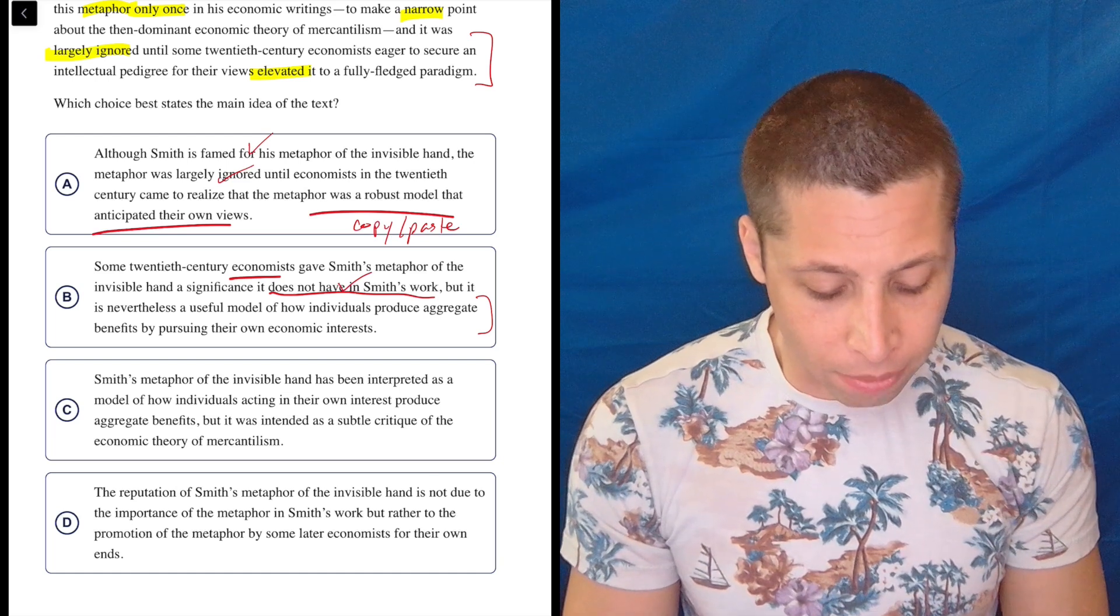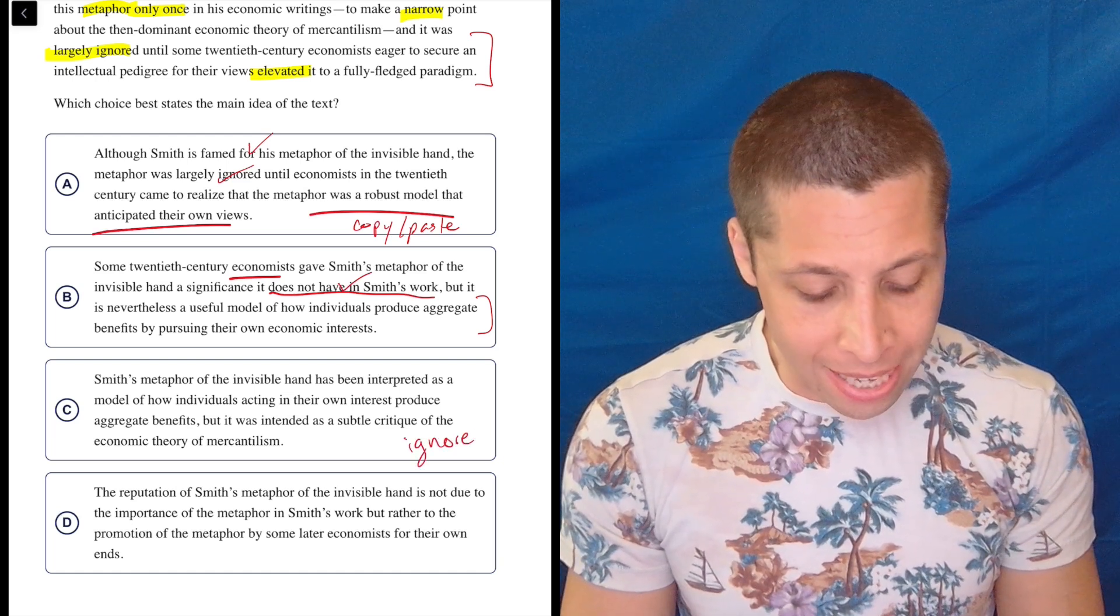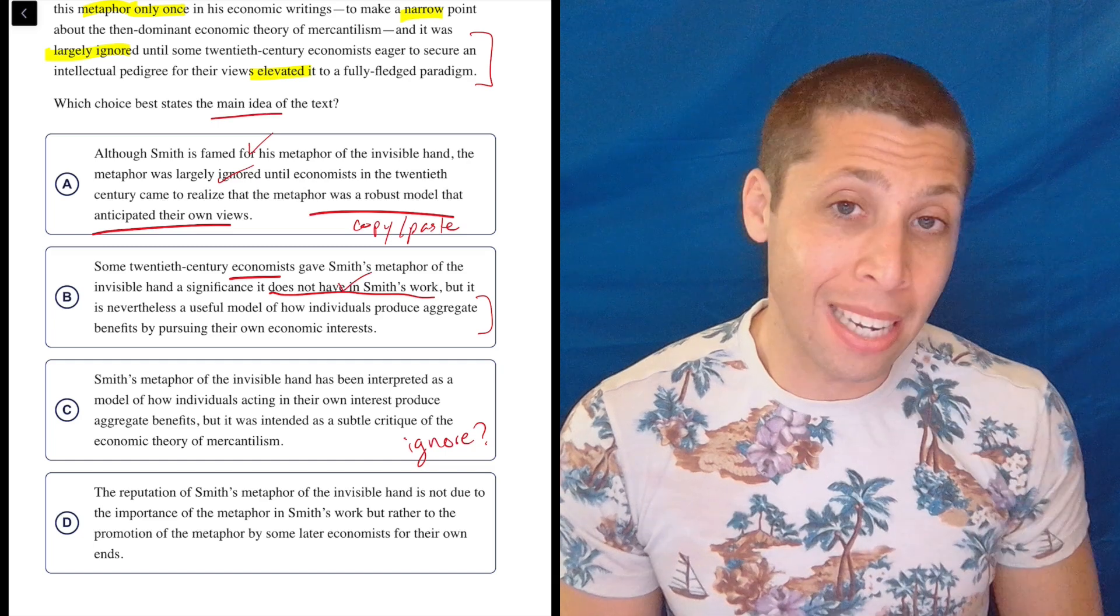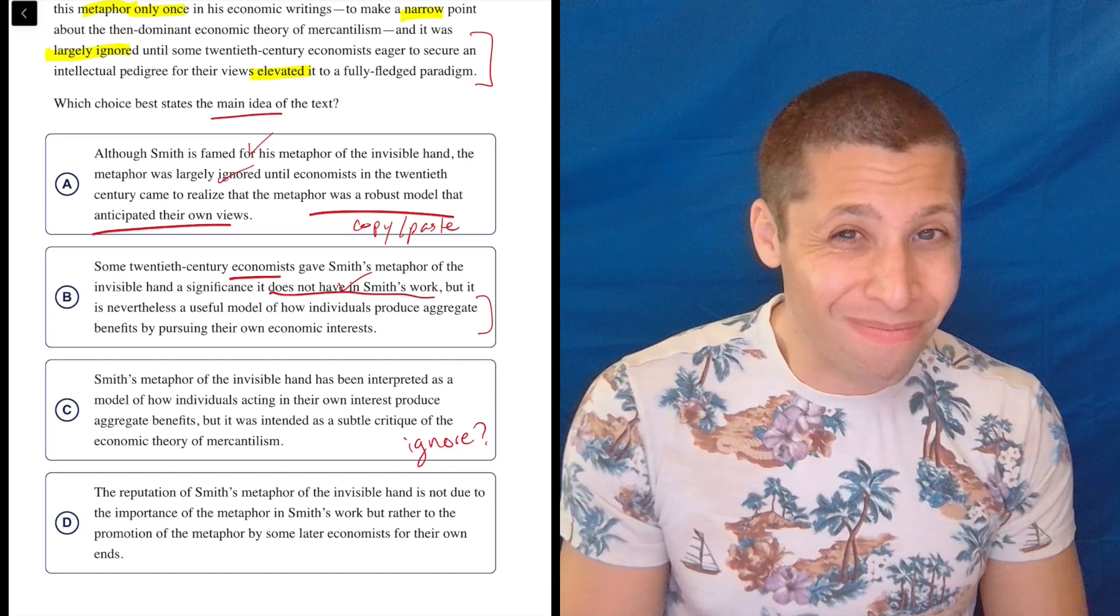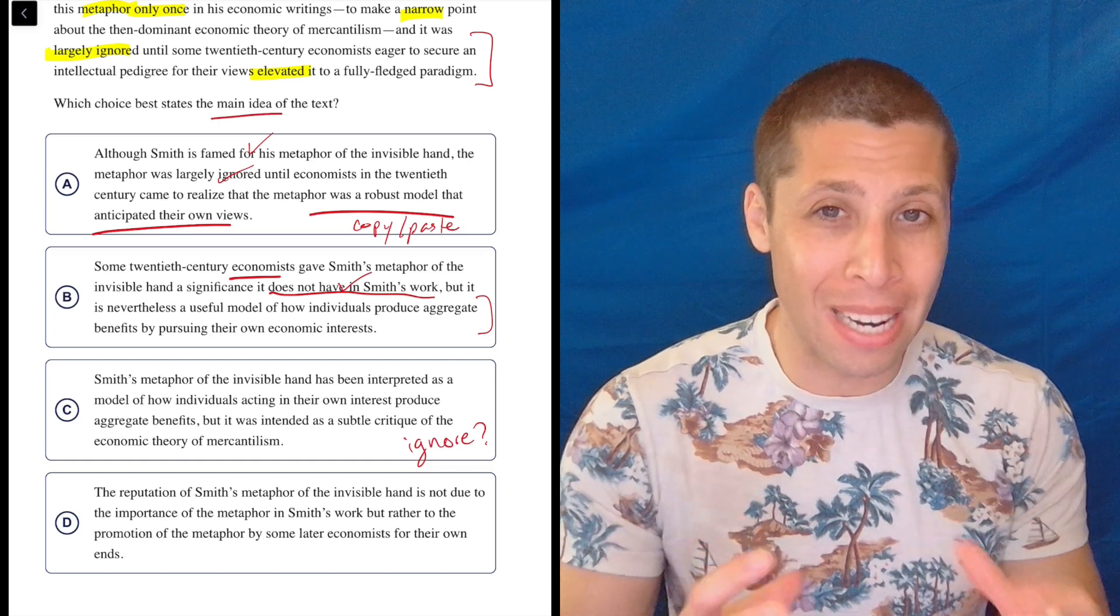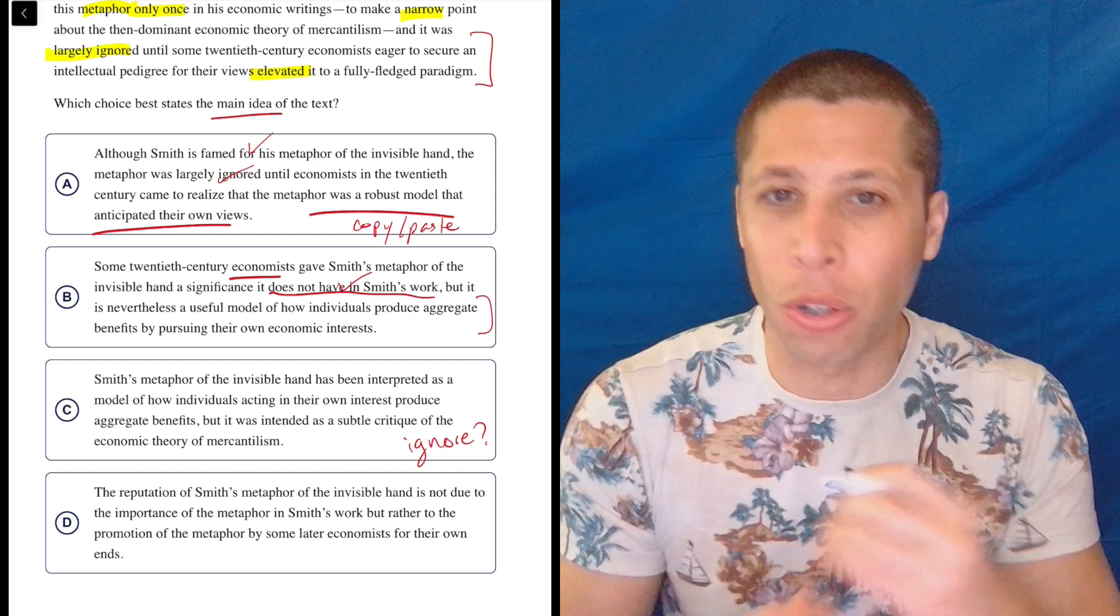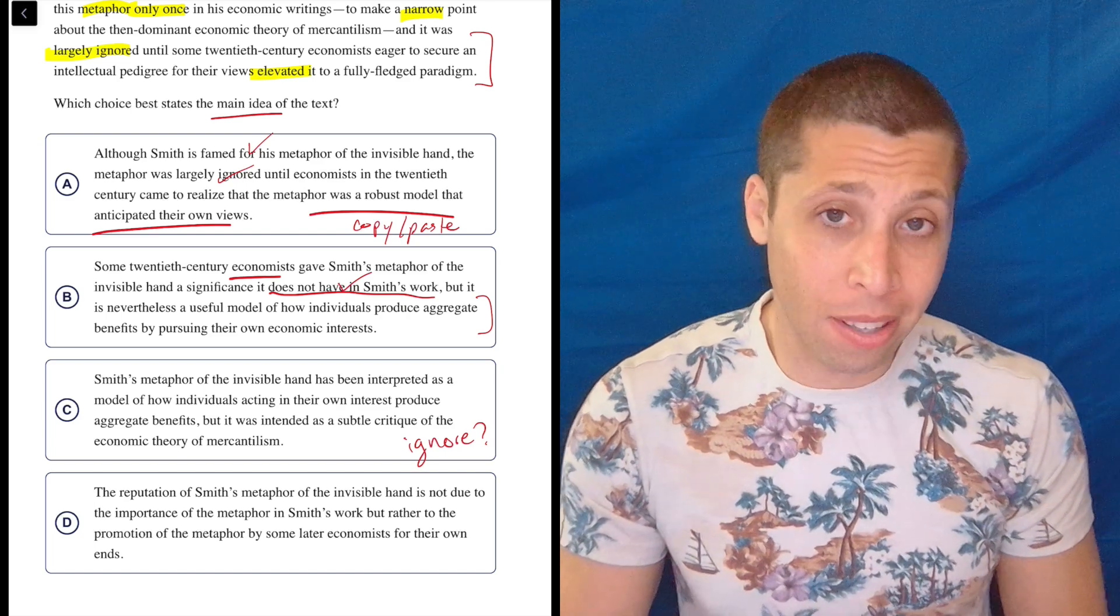And then yet it comes up later as being the one thing we know about Adam Smith. So where is that kind of ignore idea? We're supposed to do the main idea. This seems to just really focus on the economics here, but that idea was once ignored and now isn't.